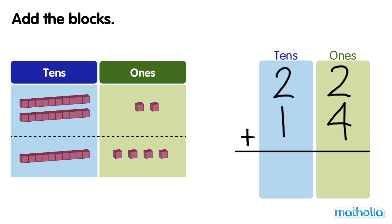To add the blocks, let's add the ones first. There are 6 ones. 2 and 4 are 6.